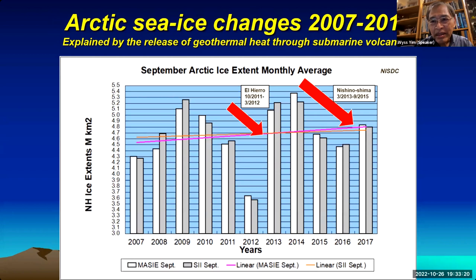In this diagram you can see September sea ice area on two types of measurement: the multi-sensor method (MASIE) and the CIS Index — another way of measuring sea ice. They show a similar pattern. Looking at the changes over this period of more than ten years, the drastic change in sea ice was in 2012 due to El Hierro, and then the more gradual change from 2014 to 2016 was from Nishinoshima. These two submarine eruptions basically explain, because of the timing and scale of the eruptions, these declines in sea ice.